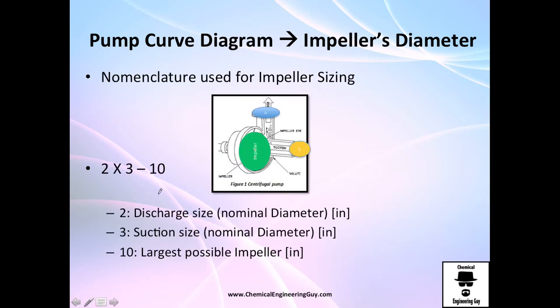What happens with this? Well, we have these nomenclatures just to have so you are sure on what we are talking about later when we're choosing pumps. The number 2 means the nominal diameter of the discharge pipe, which is this blue one. This is of course in inches. Number 3, the suction line, the nominal diameter will be this yellow one, also in inches. And 10 will be the largest possible impeller in that pump.